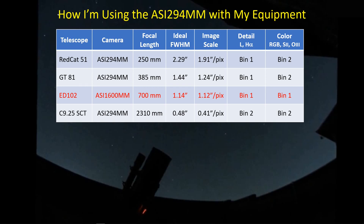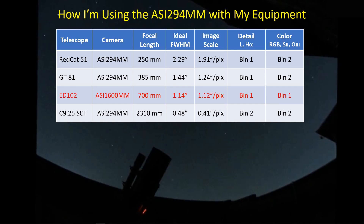Since I'm after detail with these two telescopes, I'm going to be using BIN-1 mode to capture detail, such as would come from the luminance filter and the HA filter. But when it comes to just getting color, I'm going to use the RGB filters, S2 and O3, in BIN-2 mode, and then combine those pictures with the BIN-1 detail images to get the final image. But ultimately, my final image will be in BIN-1 mode. I'm just going to stick with the ASI 1600 and the ED-102. And then finally, the SCT, which is a 2,310 millimeter focal length. I can still be a little oversampled with an image scale of 0.41 arc seconds and rely solely on BIN-2, which is where the sensor advantages really are.